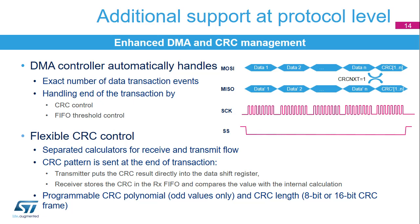Results from the transmitter's CRC calculator register are loaded directly into the shift register, and the received CRC value is stored in the FIFO and compared with the receiver CRC result. The CRC polynomial used for the calculation is programmable, and the length of the CRC pattern can be set to either 8- or 16-bit frames.